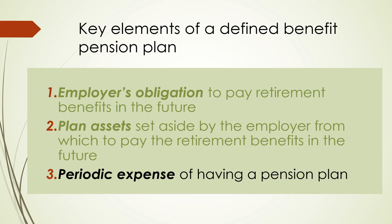There are three elements associated with a pension plan. First, there is the employer's obligation to pay retirement benefits in the future — this is the liability. Second, plan assets are set aside by the employer to pay the retirement benefits in the future — this is an asset where they set aside funds and property to cover future expenses. Third, there is the periodic expense of having a pension plan, which is what we're going to focus on in this presentation.